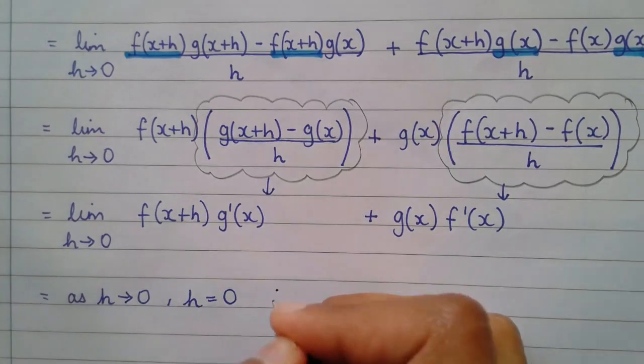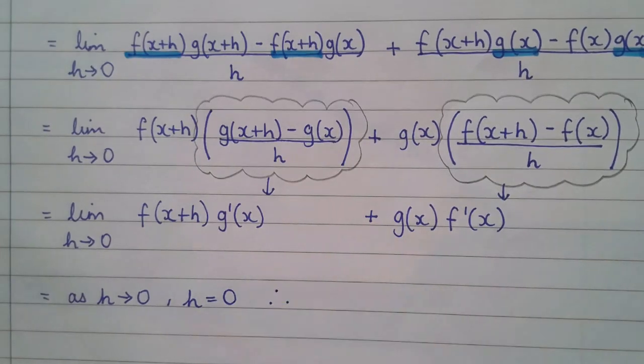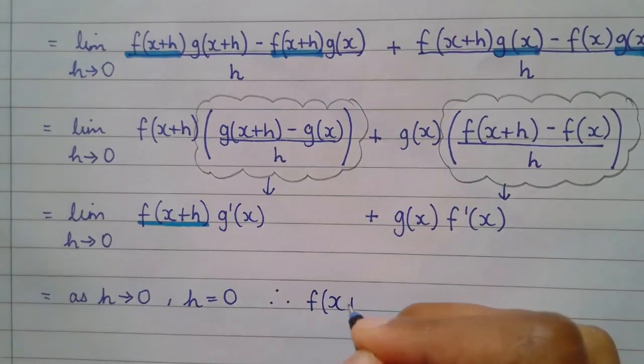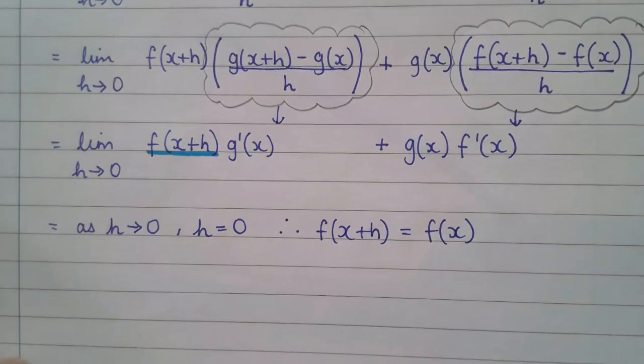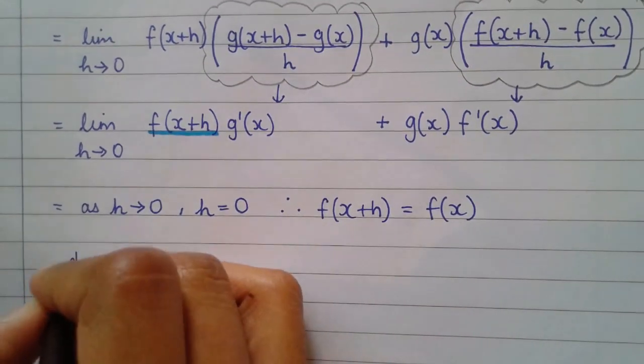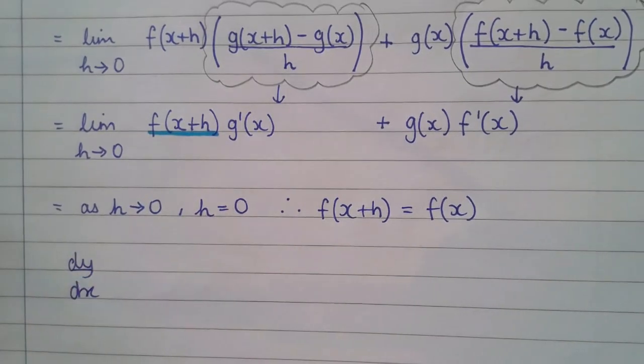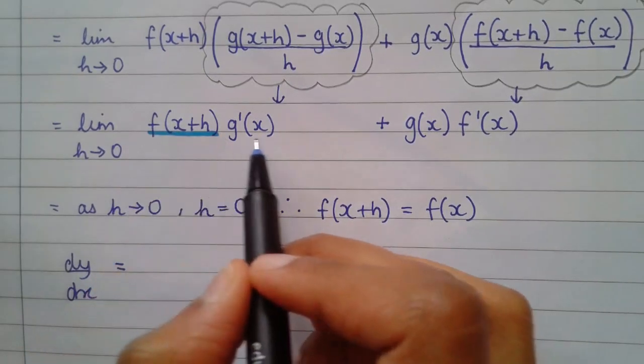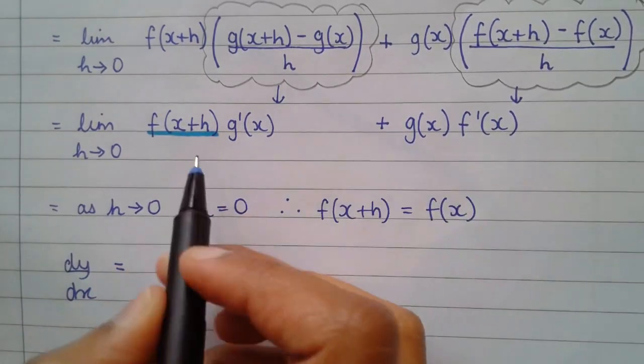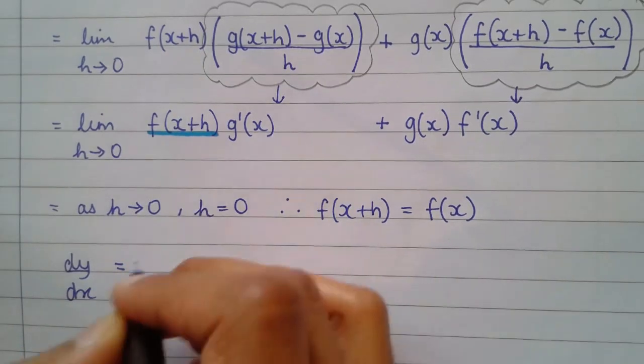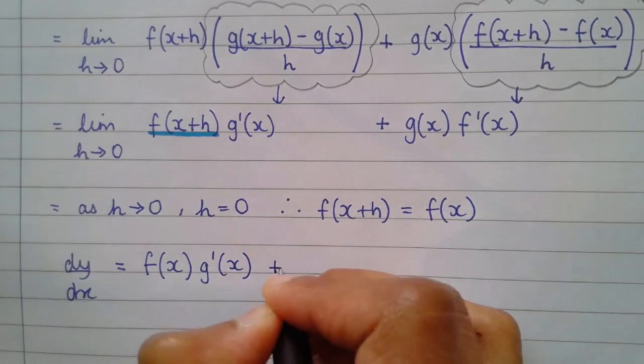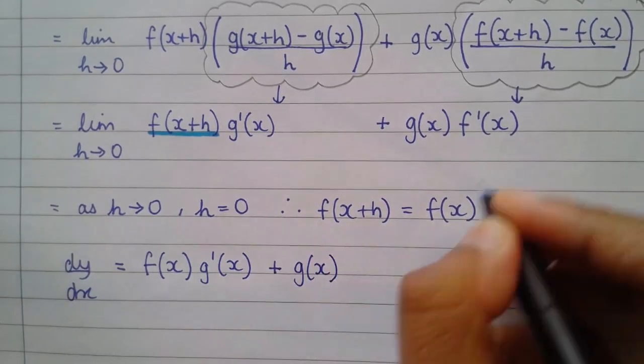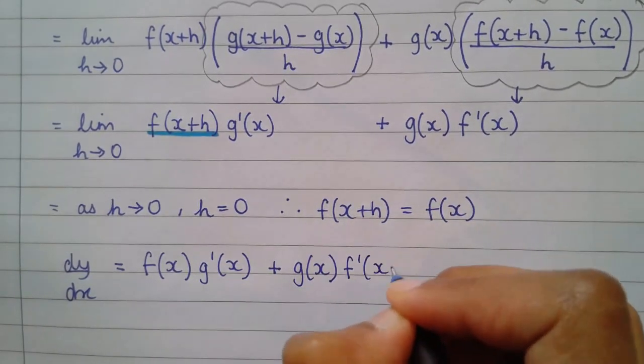Therefore, this f of x plus h you had, now becomes f of x. So, this is just your side note in the proof. And your final conclusion is dy by dx. And this is where all of this line will get rewritten. The f of x plus h has now become f of x. It's being multiplied by the derivative of g of x. Plus, g of x being multiplied by the derivative of f of x. And this is the proof of the product rule from first principles.